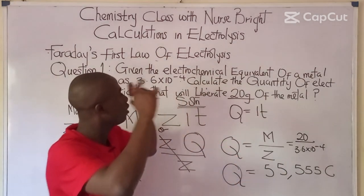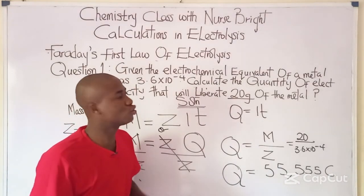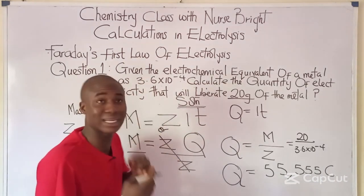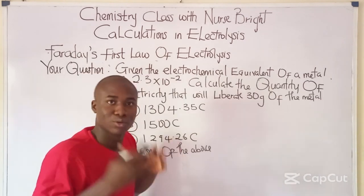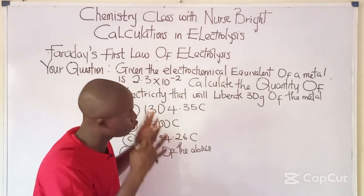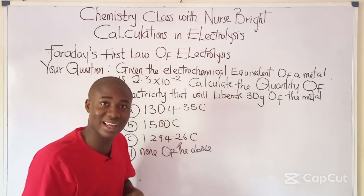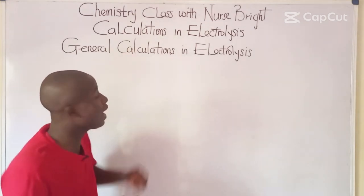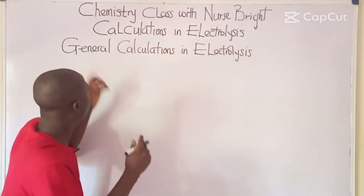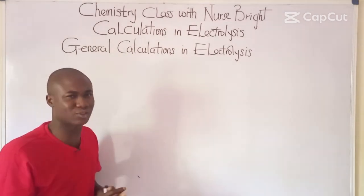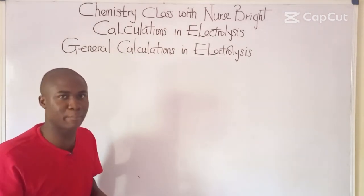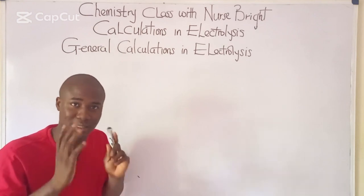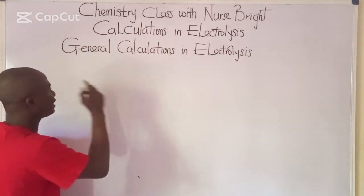With this, get ready for your own practice question, then we move over to the other aspects under the calculative aspect of electrolysis. Moving to the next aspect: general calculations in electrolysis. This particular aspect is very important. I'll bring a formula and explain each parameter before solving practice questions.